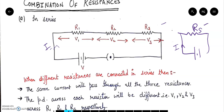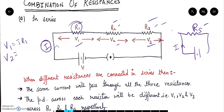When we connect resistances in series, one thing — which is current — remains the same through R1, R2, and R3. Why? Because there is no source or sink. If there is a single wire, the same current will flow. So if the resistances are different but the current is the same, it means their cross potential drop is different. Let us suppose R1's potential drop is V1, R2's is V2, and R3's is V3. Then V1 equals I times R1, V2 equals I times R2, and V3 equals I times R3.